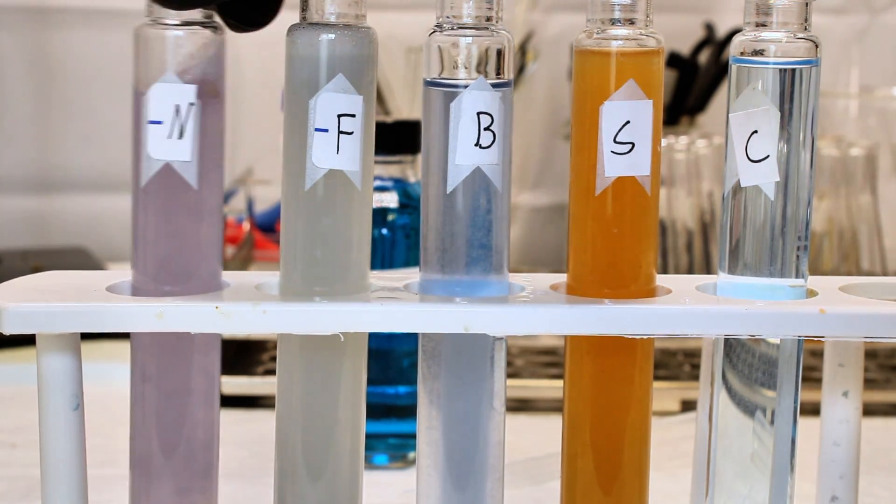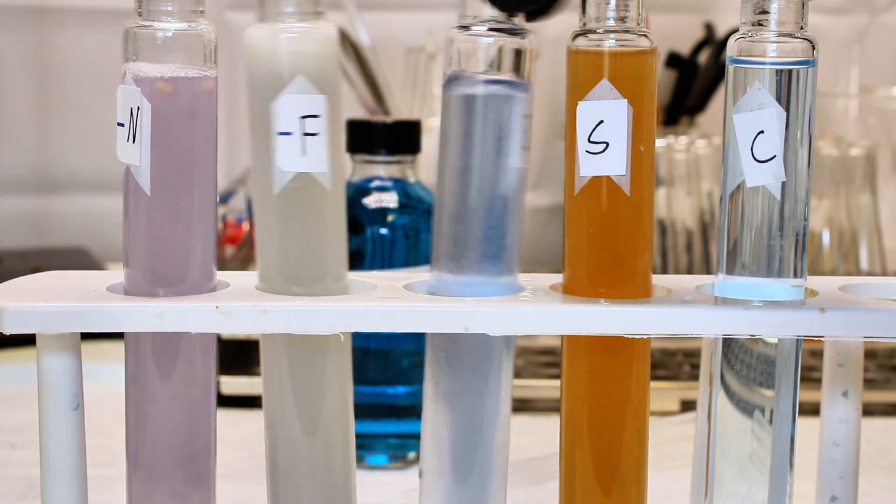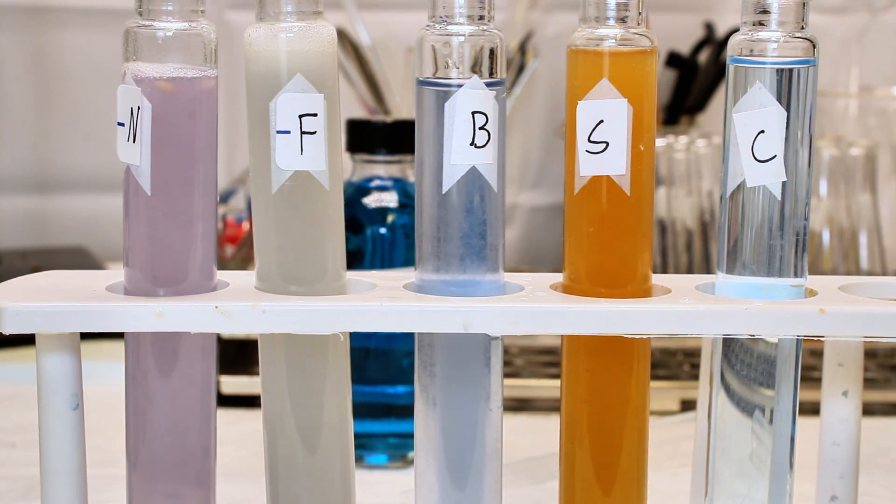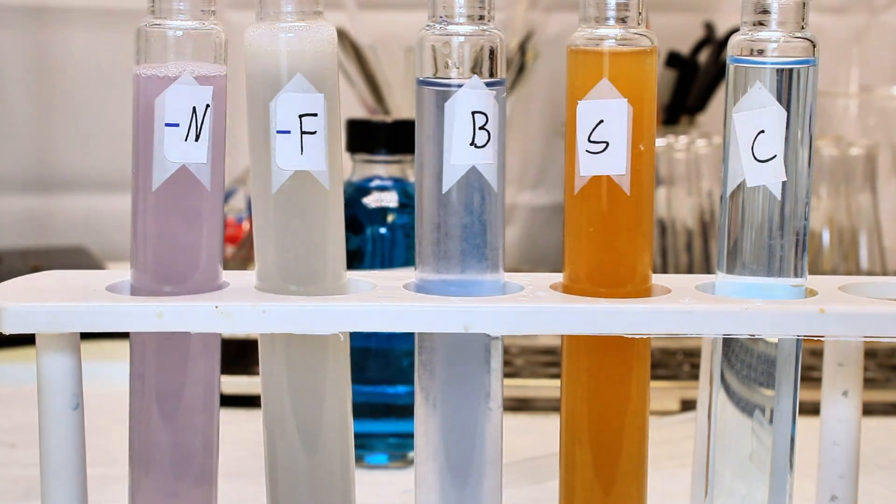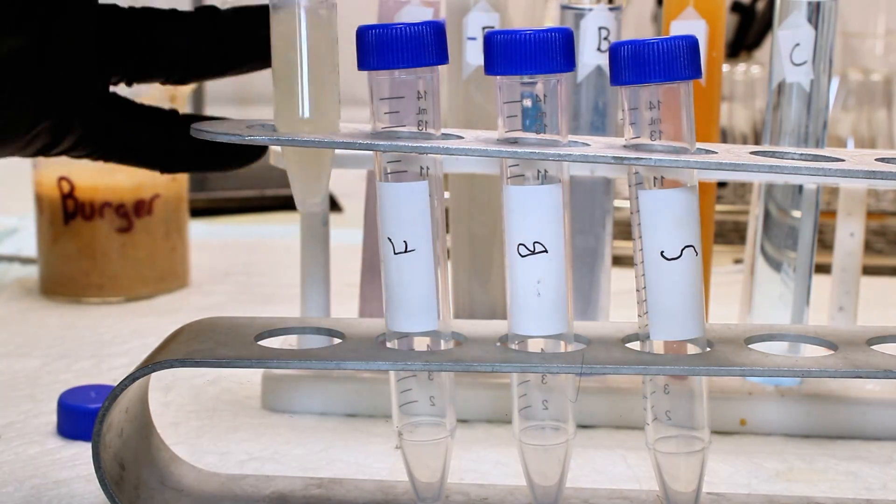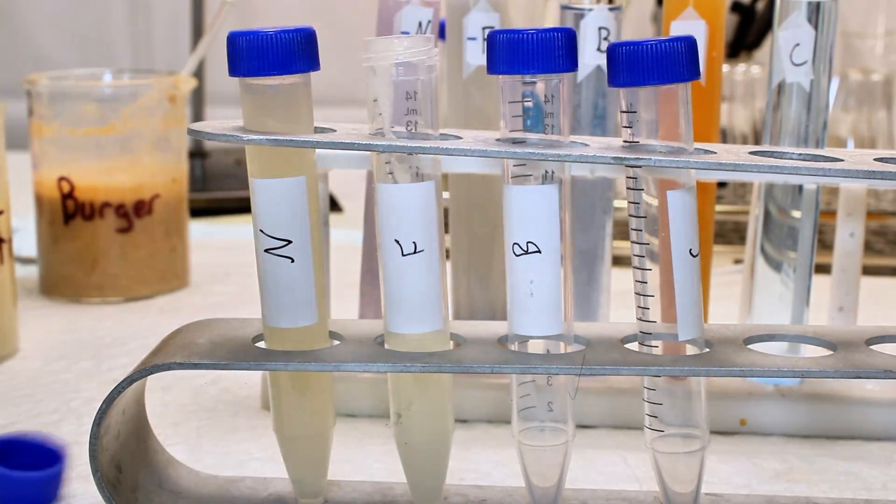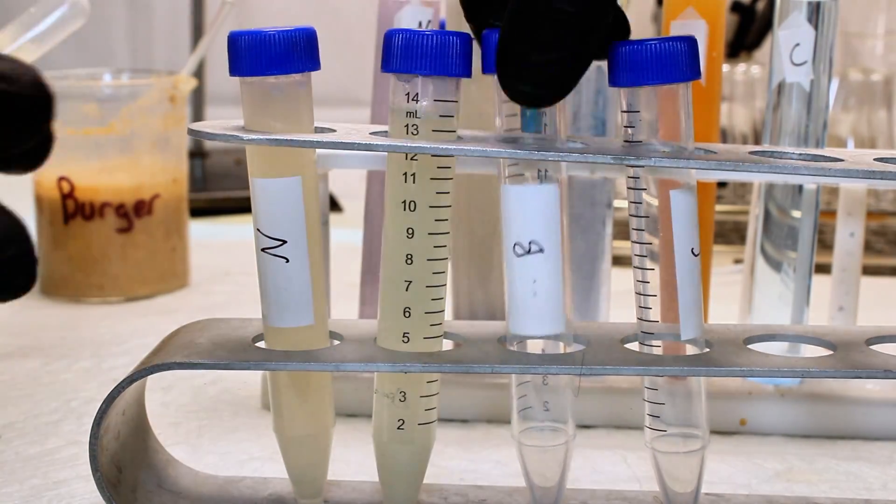The fries clearly tested negative for protein, as did the sauce, but the burger was really tough to read. To try and get a clearer result, I added a small amount of sodium chloride to the samples here, sonicated them in hot water at 55 degrees Celsius for 30 minutes, and then centrifuged to try and force all the sediment that was obstructing my view to the bottom.